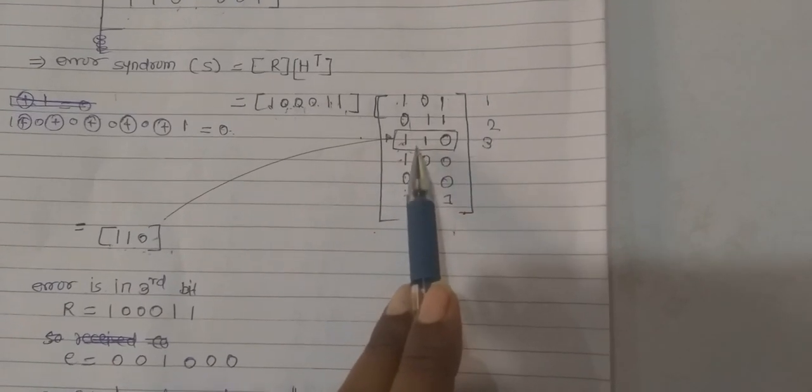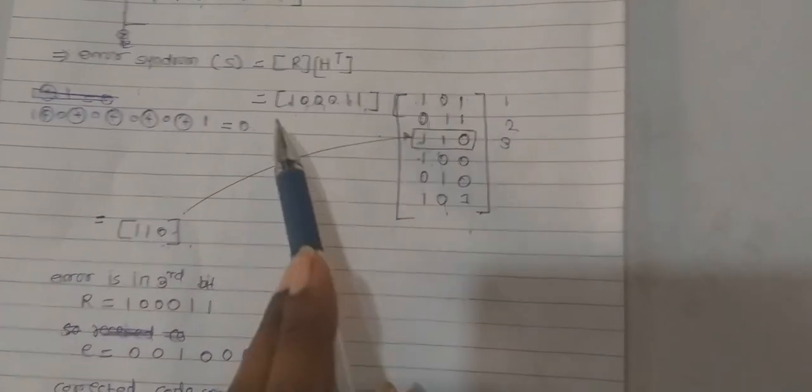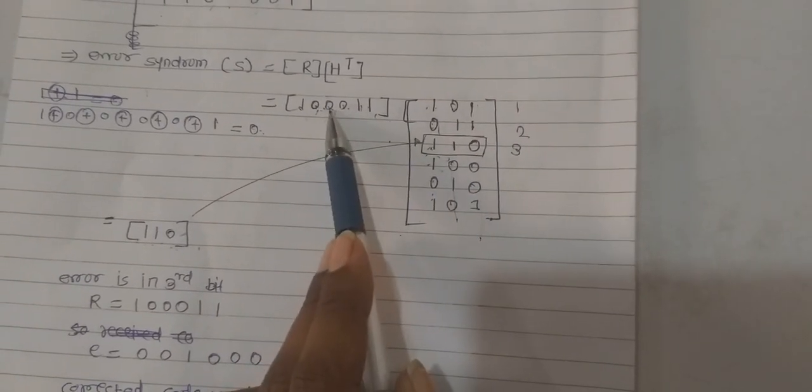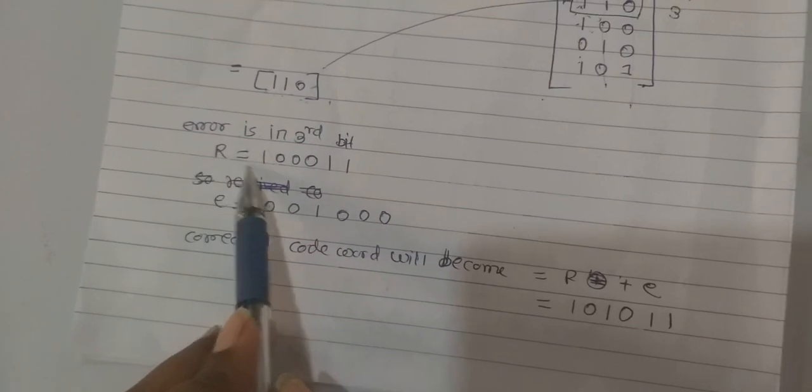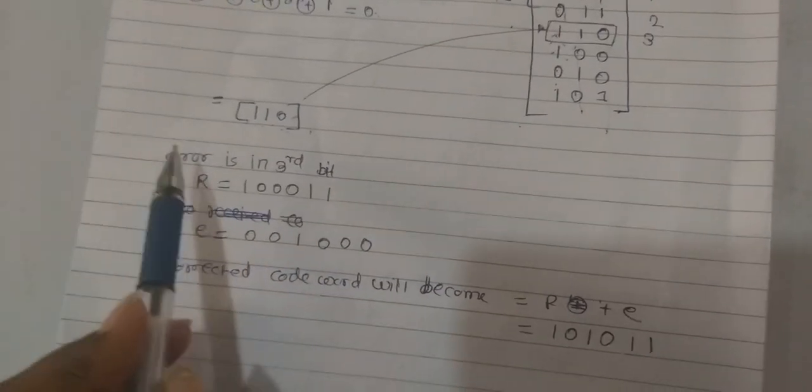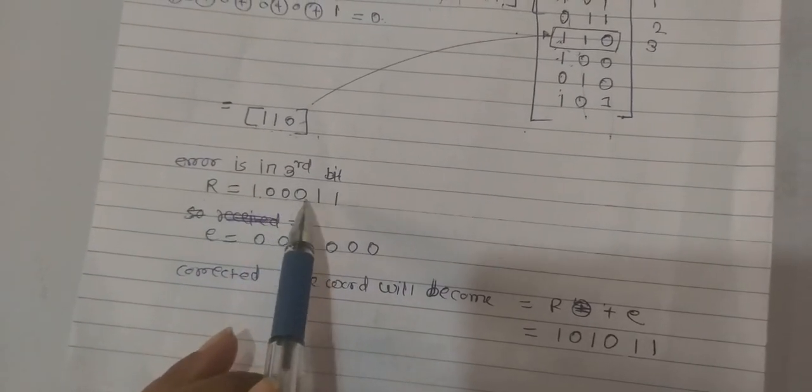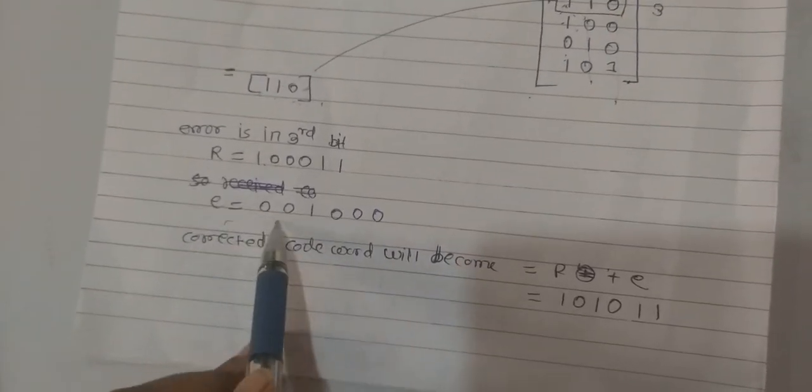It indicates that the syndrome row indicates in the received error code vector, in the third bit position there is error. Error in the third bit. Received vector is 1, 0, 0, 1, 1. And error is, we can calculate as per the syndrome calculation.